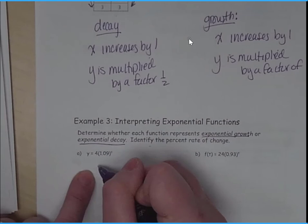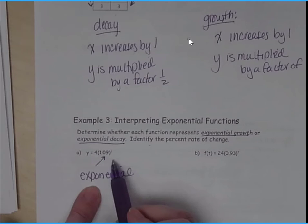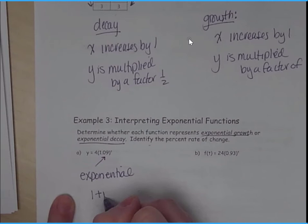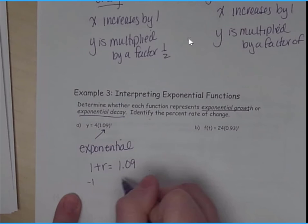And what did this change by? Well, if I started at 1, what did it change by? Well, we can do it mathematically here. So this is represented by 1 plus r, and that equals 1.09, because this is where this is coming from. Subtract 1 from both sides. r equals 9 hundredths. So it's a 9% growth rate.